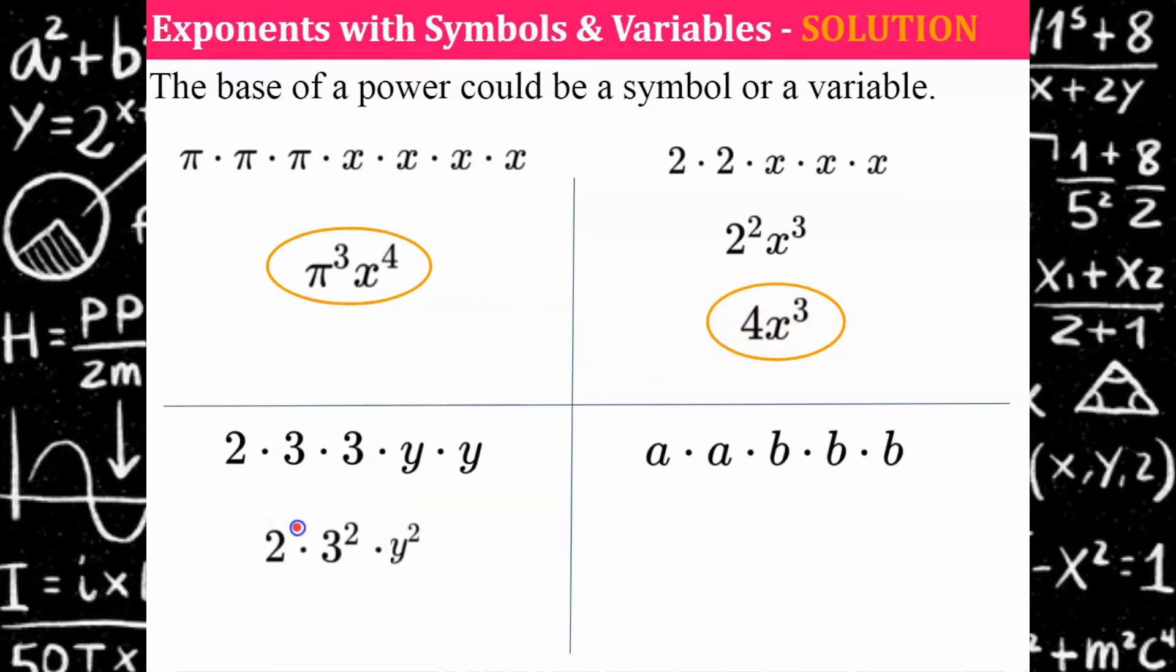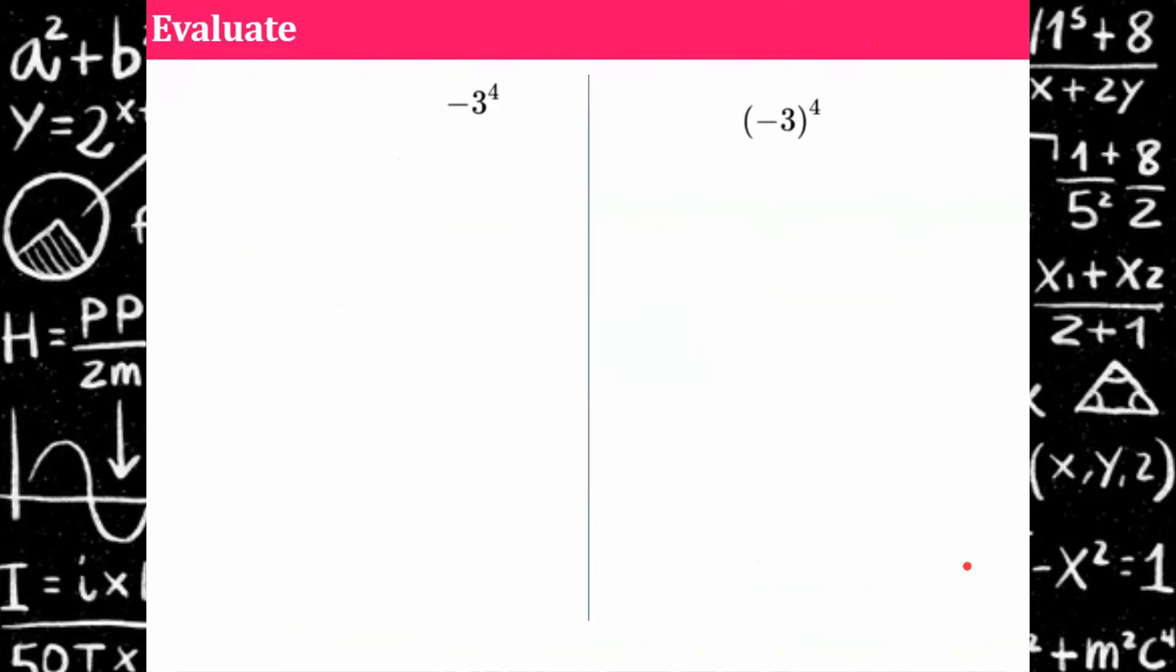All right, I have one two, which we don't have to write that one, it's invisible. Two threes and two y's. So now I need to simplify two times three squared. Three squared is nine, nine times two is 18. So I have 18y squared. Here I have two a's and three b's, and that's as simplified as you can get. A squared. Remember this is a squared multiplied by b cubed. The multiplication sign is invisible.